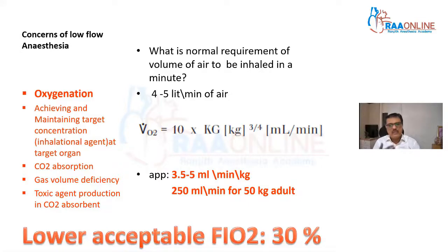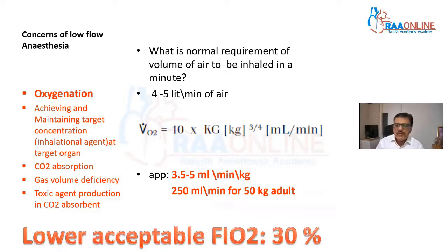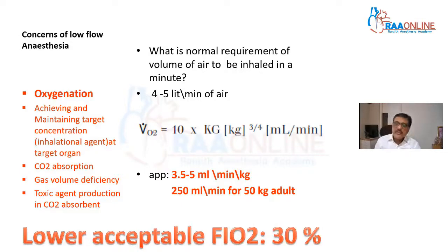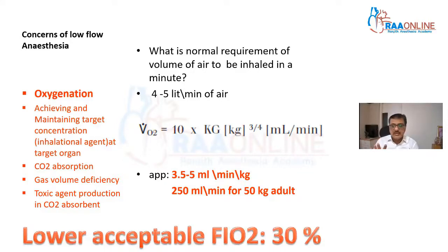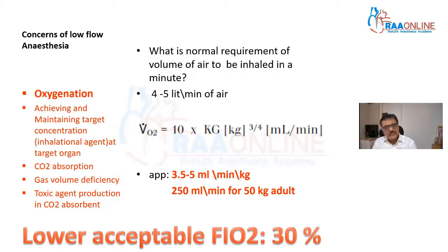When we inhale air, we are inhaling about 1 liter per minute of oxygen minimum. Our actual requirement of oxygen is only 250 ml per minute — this can be calculated by the Grey's formula, which comes to 3.5 to 5 ml per kg per minute, roughly 250 ml per minute for a 50 kg patient. So God has given us a 4-times safety margin, and that is why the lower acceptable FiO2 under anesthesia is 30%, which provides a proper safety margin.